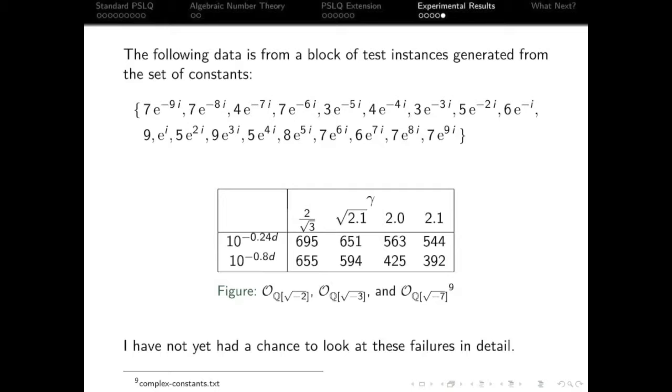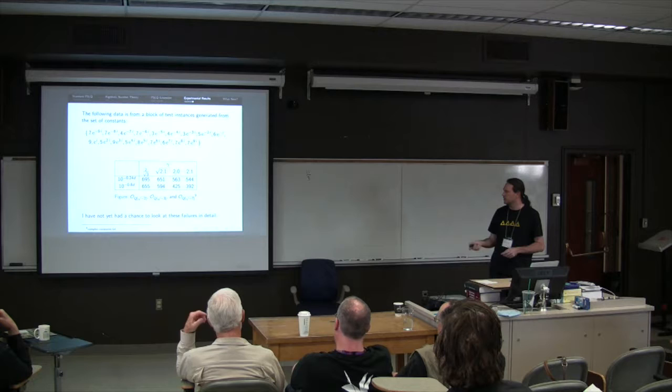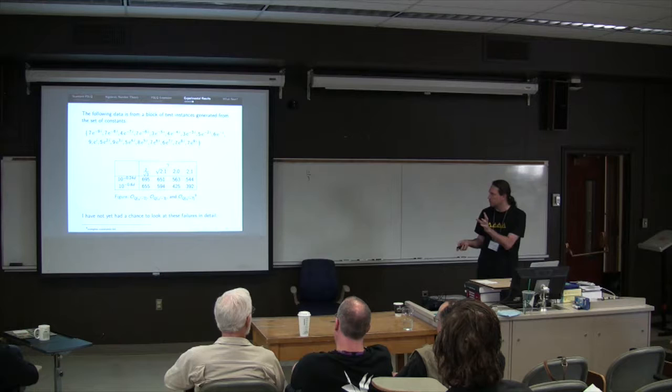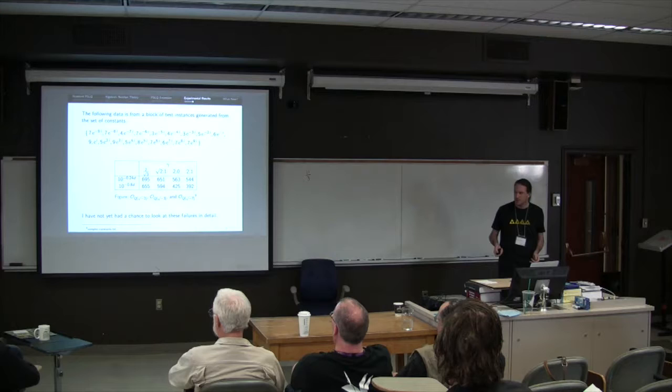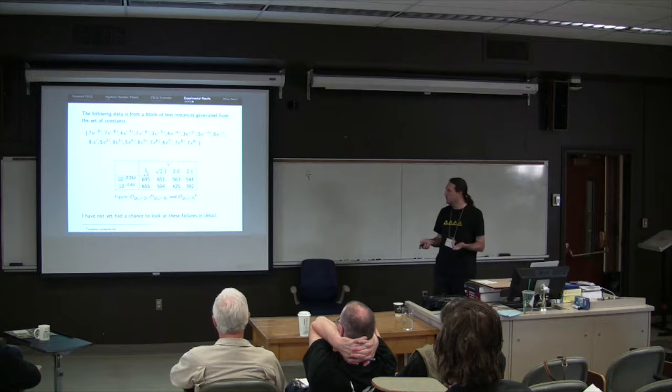In principle, the integer relation algorithm should pick that up, but I wanted to see it, so I threw them in there. And the results aren't quite as good. So we're looking at, by the time we've actually got the sensible rho and threshold, we're still looking at nearly a 50% fail rate. This isn't as nice. Now, this is cutting edge stuff. The computations for this finished yesterday.